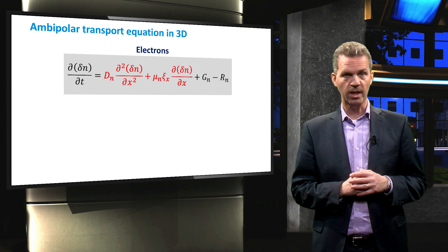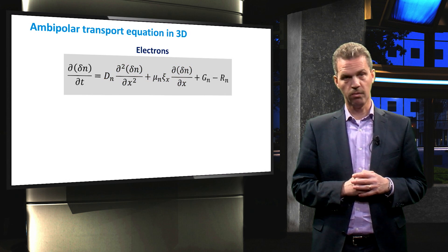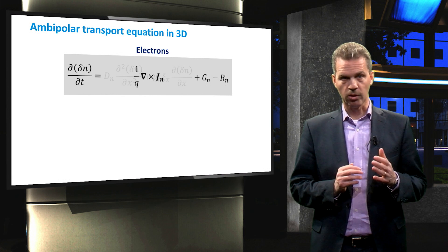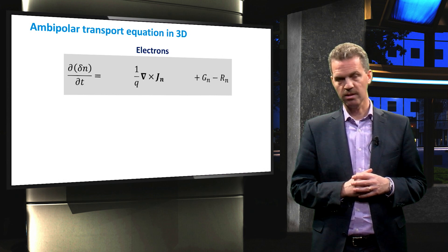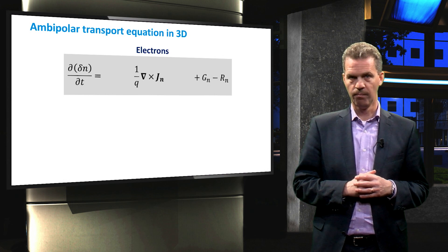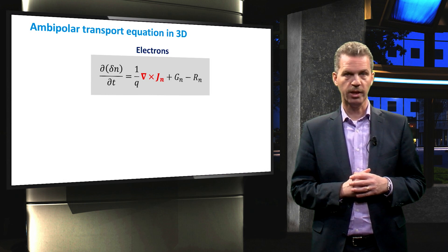When we expand these terms to three dimensions, we obtain the following relation. It is the cross product of the nabla operator and the current density vector Jn, divided by the charge Q.